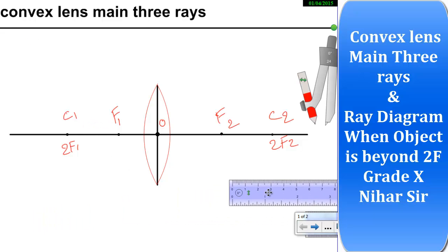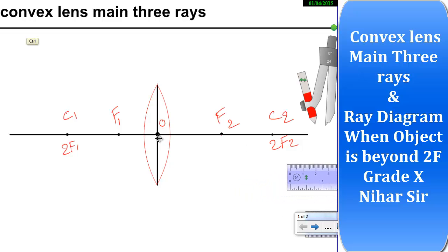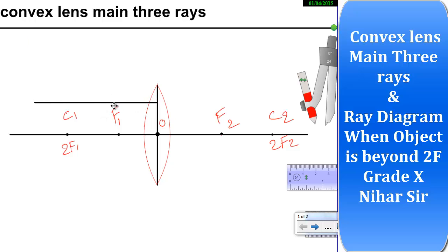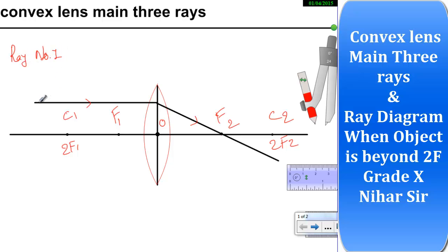Now we will learn the three main rays for convex lens. Ray number 1: when a ray is passed parallel to the principal axis, it will refract and pass through F2. So in convex lens, a ray parallel to the principal axis will pass through F2 after refraction. You should note this down if you are making notes.